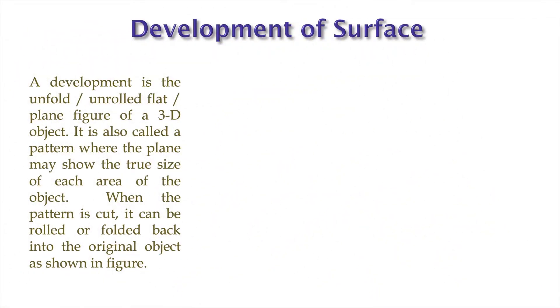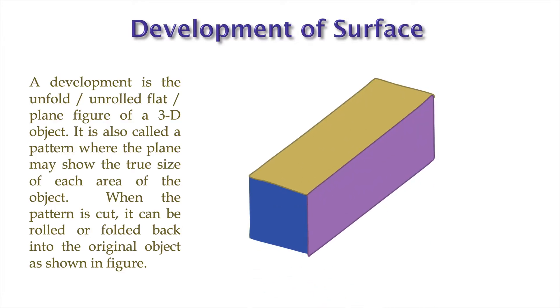As I have told you, the development of surface means unfolding an object. After unfolding, what shape are you having? There is a cuboid shape, and if we unfold all the surfaces of a hollow cuboid, then what types of shapes are we having? You know that all the surfaces here are rectangular.